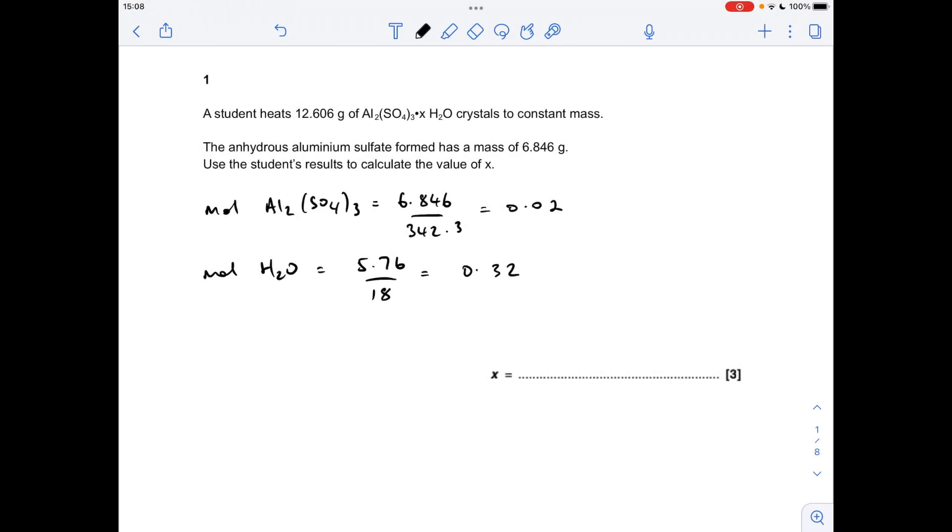Okay, so for question one, the first thing I'm going to do is work out how many moles of each part of this hydrated salt we've got. So we've got an anhydrous part, just the aluminium sulfate part, obviously the water part, and what we're trying to do is establish the mole ratio between the anhydrous and the water.